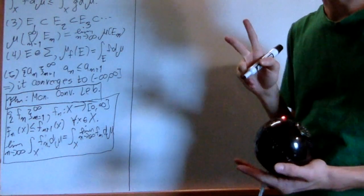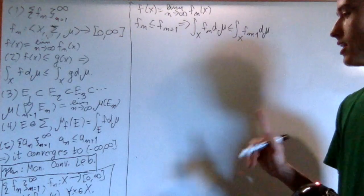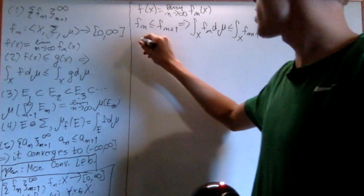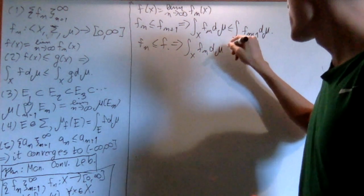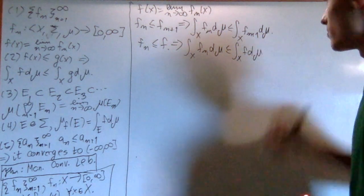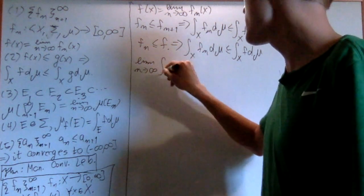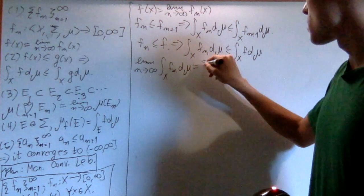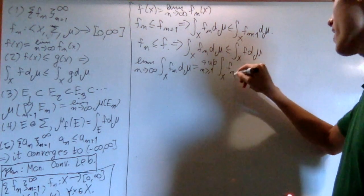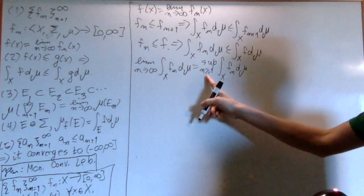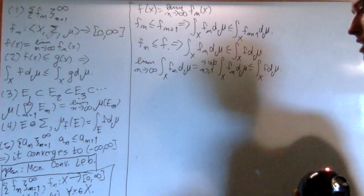Now let's prove two inequalities and then show they're equal. The first inequality is that the limit of the integrals is less than or equal to the integral of the limit, and this one is easy. By the fact that the sequence is monotonically increasing, f_n ≤ f, which means the integral over X of f_n dμ is less than or equal to the integral over X of f dμ, by prerequisite 2. So the limit as n goes to infinity of the integral of f_n dμ — which equals the supremum over n ≥ 1 of the integrals — is less than or equal to the integral of f dμ.